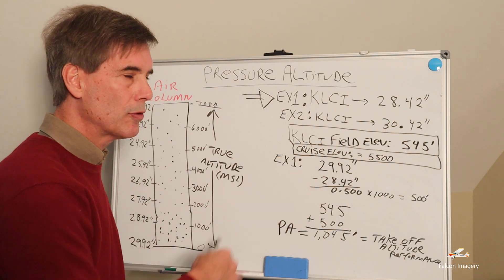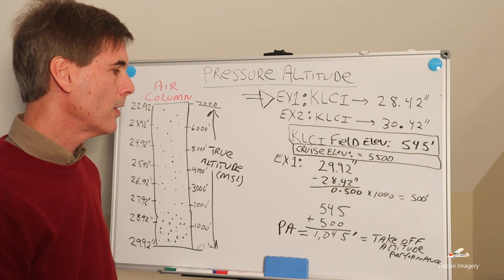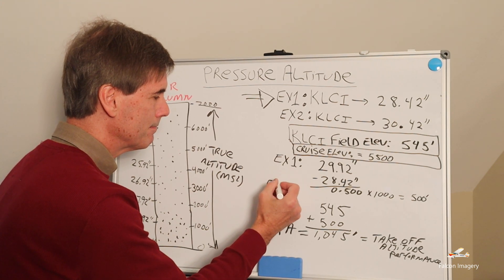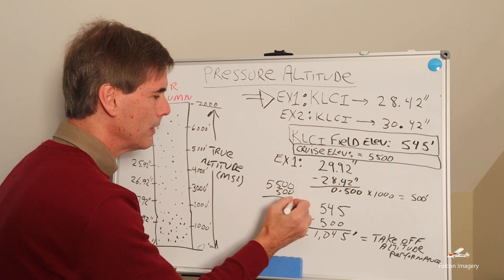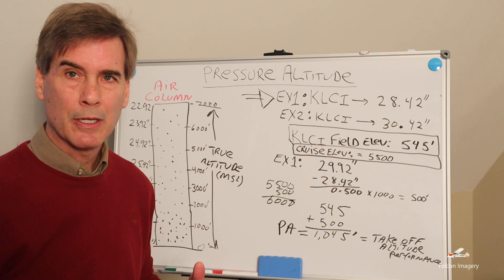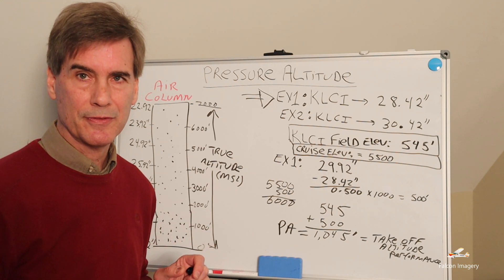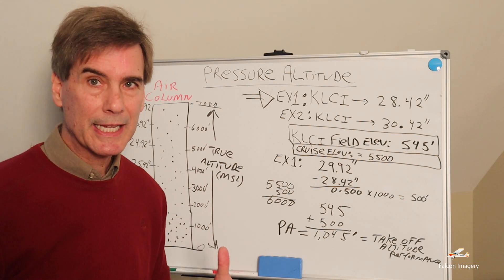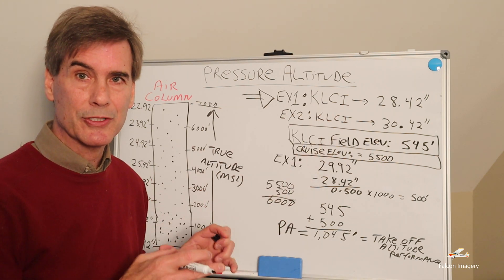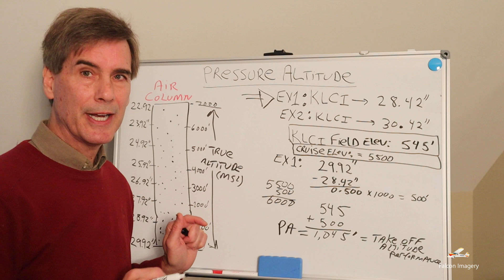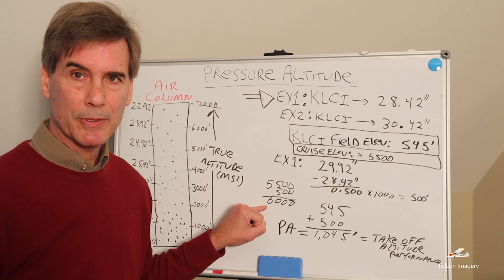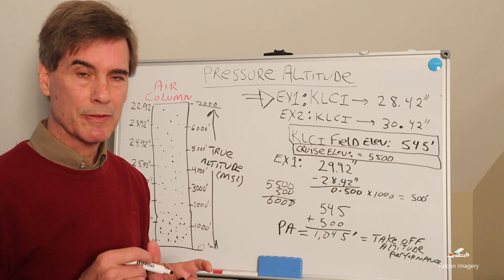The second part is the cruise elevation — we said 5,500 feet. Similarly, we take that 5,500 feet and add 500 to it, coming up with 6,000 feet. Our pressure altitude for cruise performance would be 6,000 feet, not 5,500. We're actually flying at 5,500 feet because we've got the correct barometric pressure of 28.42 set in, giving us true altitude above sea level. But how the aircraft will perform is as if it's at 6,000 feet, and that's the number we use in the cruise performance tables.